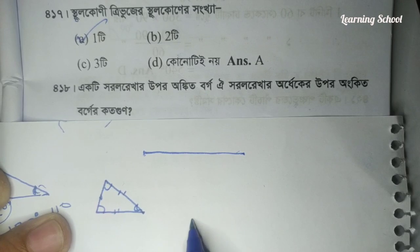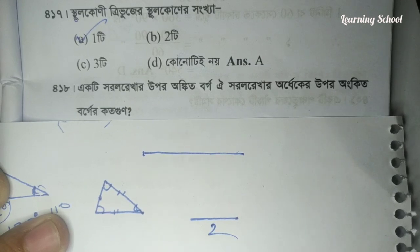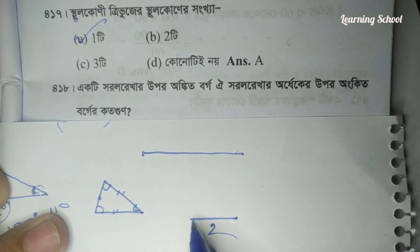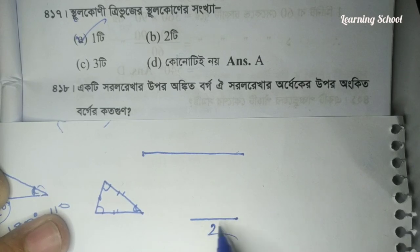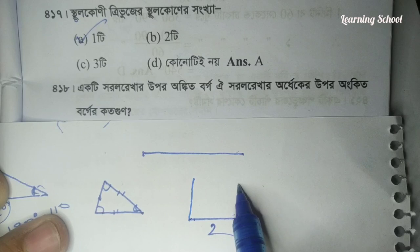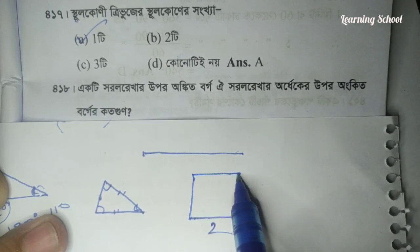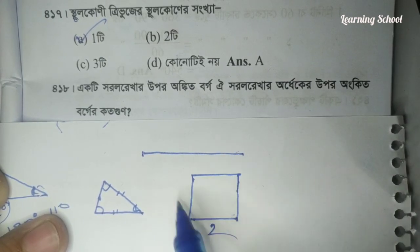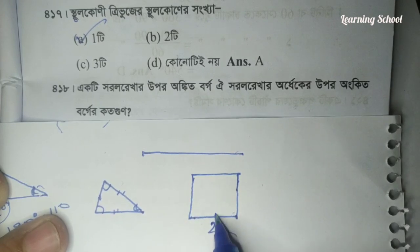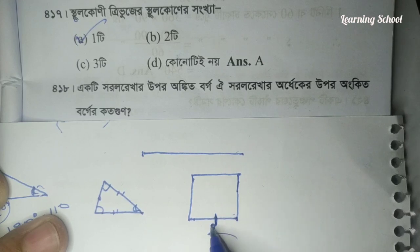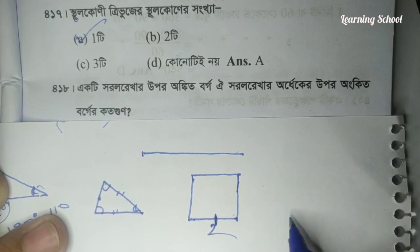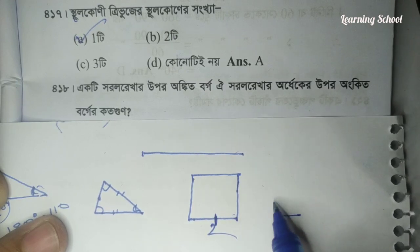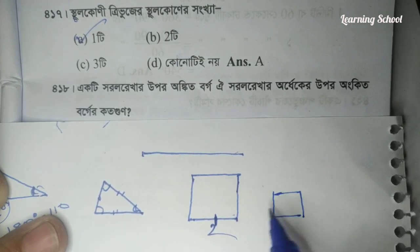I will give the four points to the difference. The difference between the two points is the difference between the two points. If you are not the one, you will be able to get the four points, the one point, and the two points.